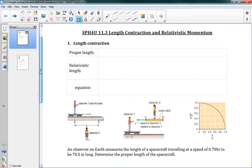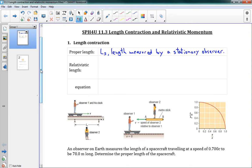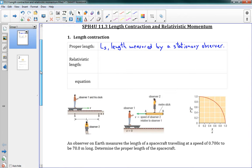So here at length contraction, just like we had a proper time, we also have proper length. This is Ls, the length measured by a stationary observer. Let's talk about this here in our picture below.